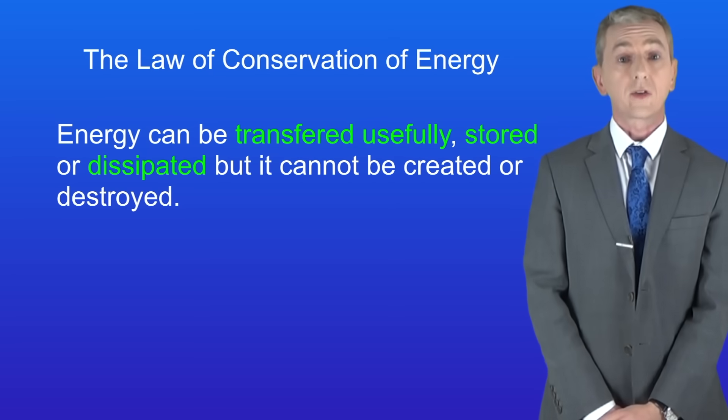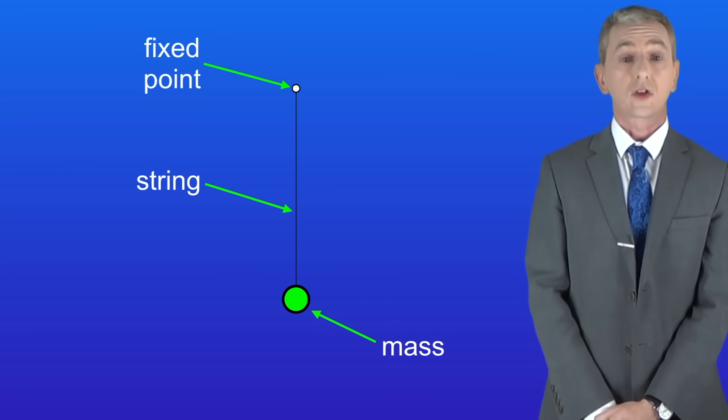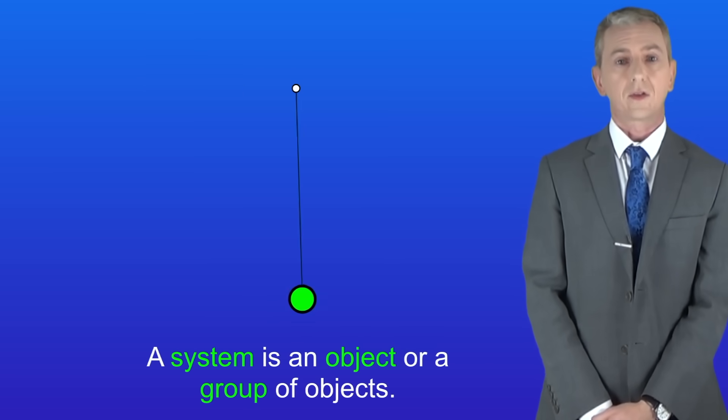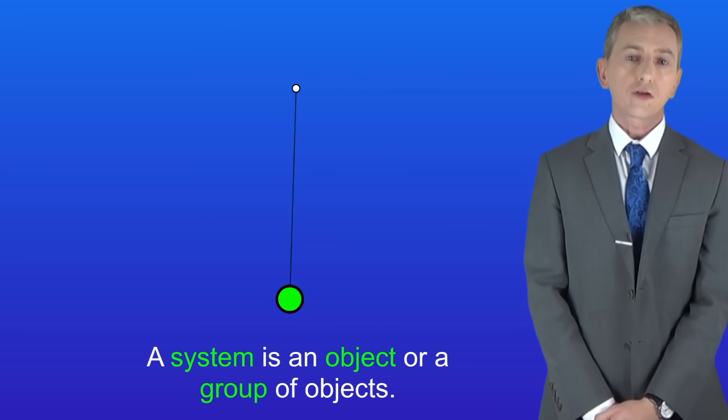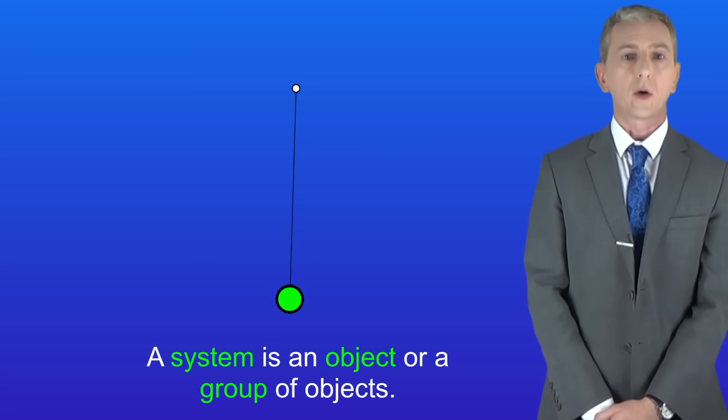Now this sounds a bit tricky so the best way to look at this is with examples. I'm showing you here a pendulum. I've got a mass attached to a string and the string is attached to a fixed point. Now scientists call a setup like this a system. There's nothing tricky about the idea of a system. A system is just an object or a group of objects.